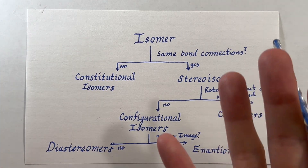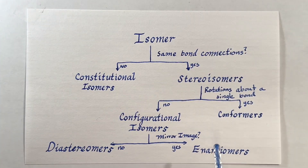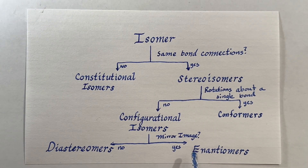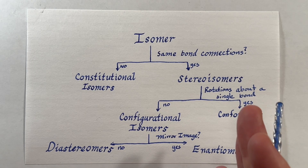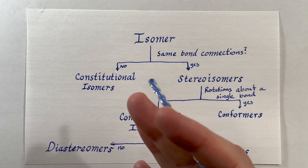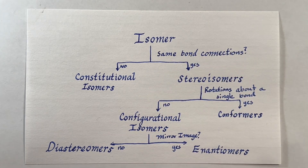Chiral molecules have a left and a right hand to them. They will rotate light in one direction or the other if they're pure.